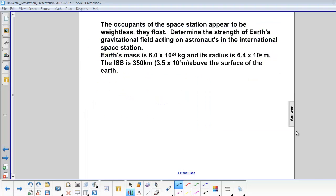The occupants of the space station appear to be weightless. They float. So we're expecting that the strength of Earth's gravitational field is very close to zero. So let's determine that strength. The Earth's mass is 6 times 10 to the 24th kilograms, and its radius is 6.4 times 10 to the 6 meters. The International Space Station is 350 kilometers above the surface, which is 3.5 times 10 to the 5th meters.